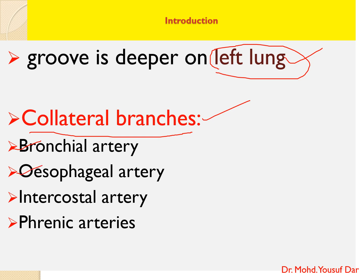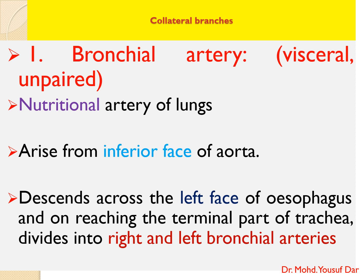We will now discuss each collateral branch. First is the bronchial artery. The bronchial artery is a visceral artery and it is unpaired, meaning it supplies a visceral organ and arises singly. The bronchial artery is the nutritional artery of the lung.